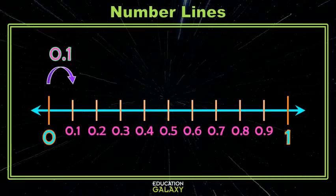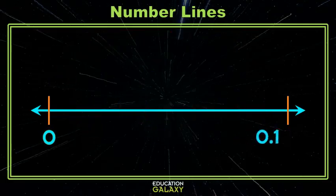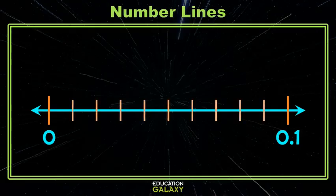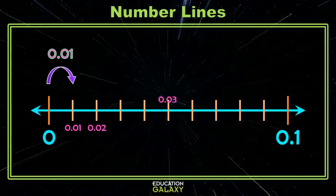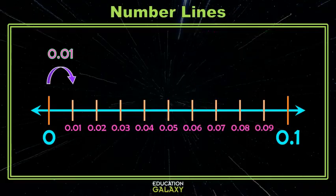So now that we understand how tenths work, what happens when I take the space from 0 to 1 tenths, and then break that into 10 parts? What is each of those spaces? They're called hundredths. So that makes that first tick mark 1 hundredth, second tick mark 2 hundredths, third tick mark 3 hundredths, fourth tick mark 4 hundredths. Well, I think you get the idea.